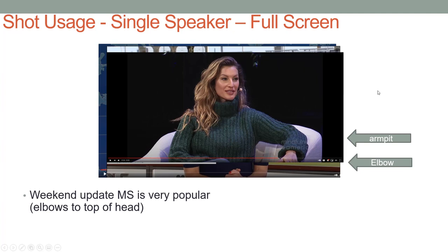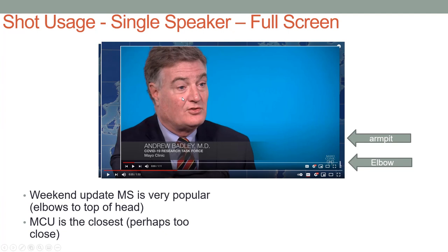This is from a video that Gisele Bündchen did with Anderson Cooper on health. We see armpits here, elbows here. So the shot is really what I'm calling the weekend update medium shot. And then back to weekend update — this shot is a medium close-up. This shot looks a little bit too close to me. If I'm going to be showing this video full screen, I really don't want to see that much of this guy. I'd really prefer something a little bit further away, perhaps even the medium shot.